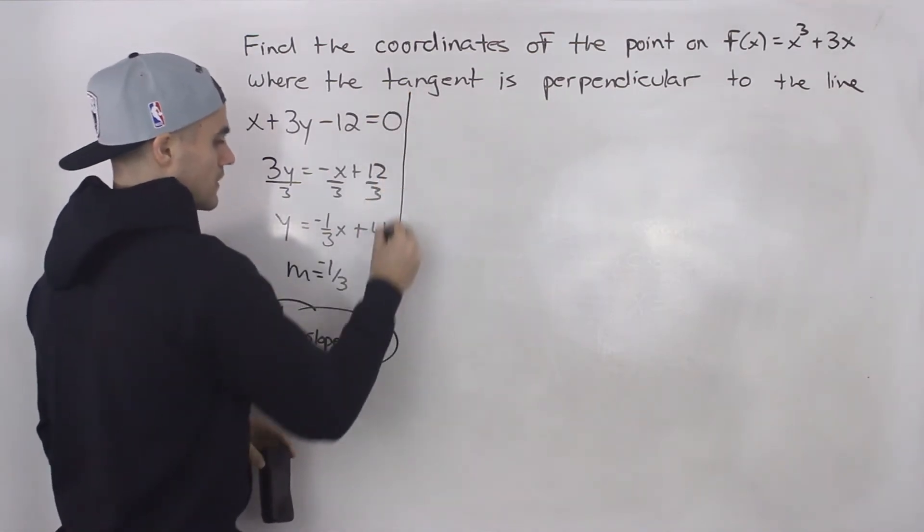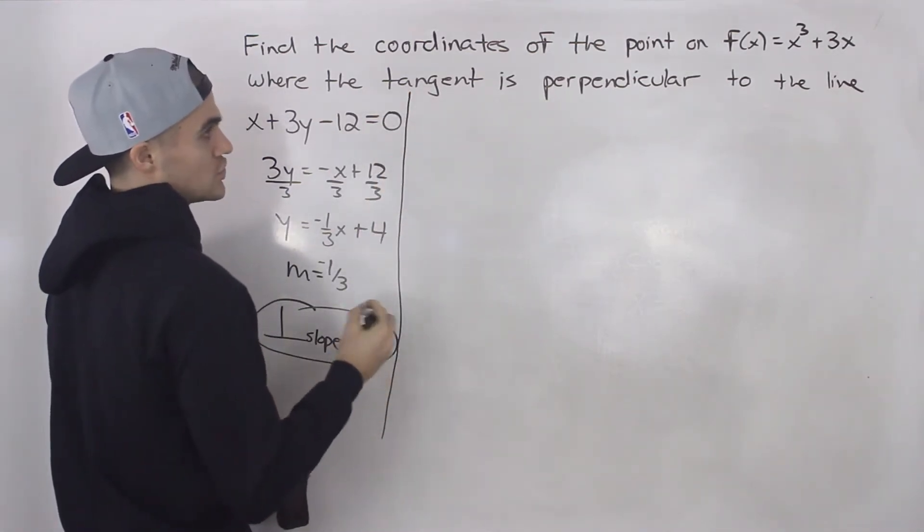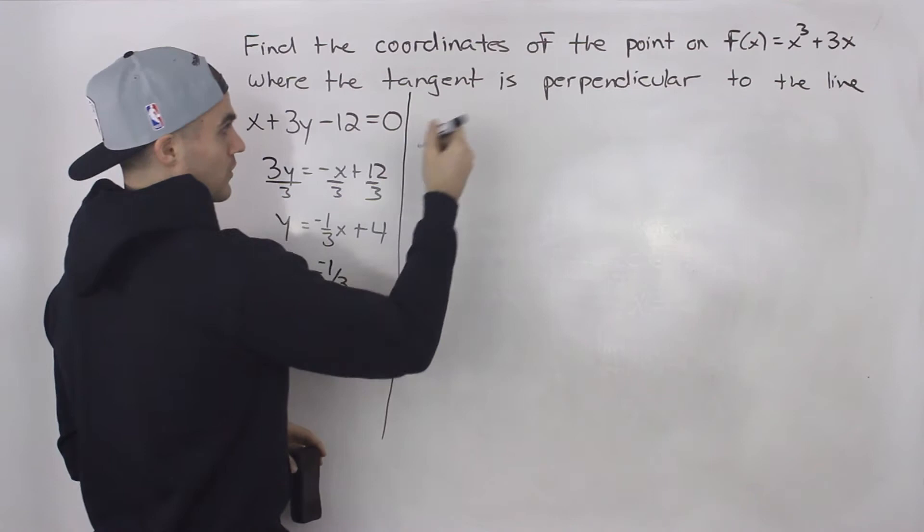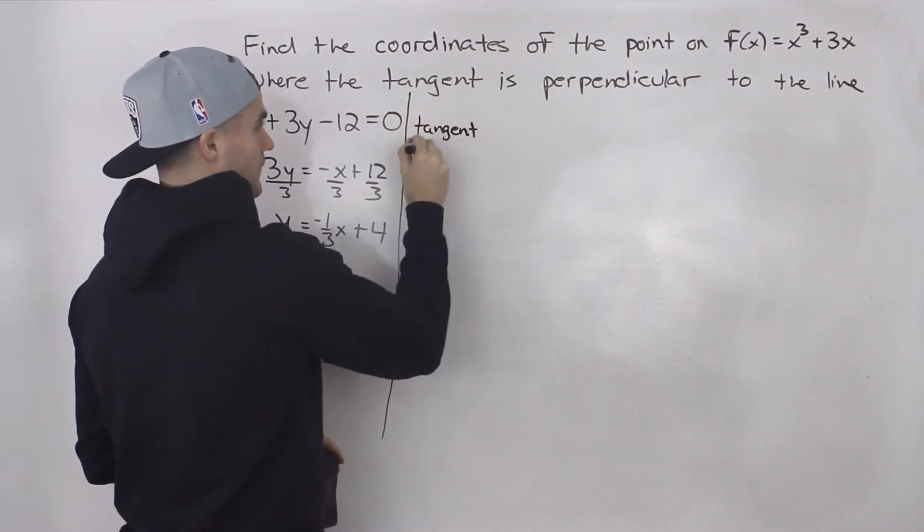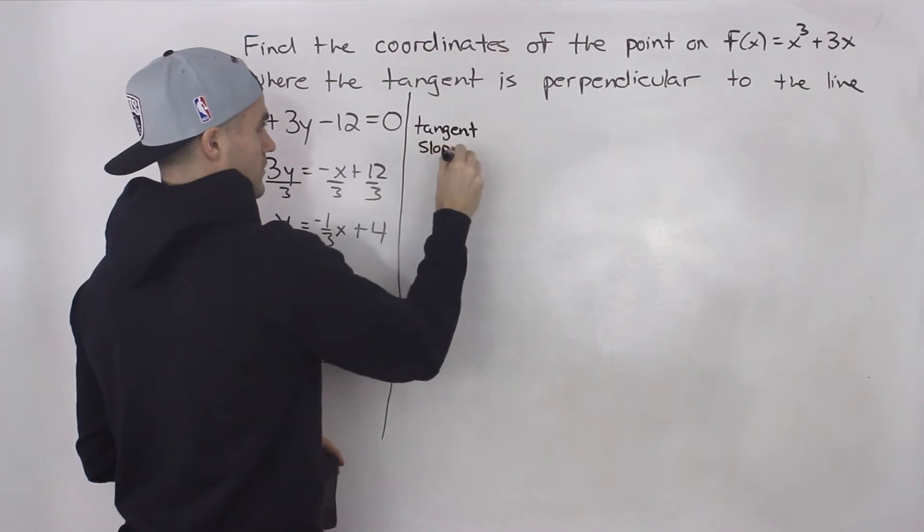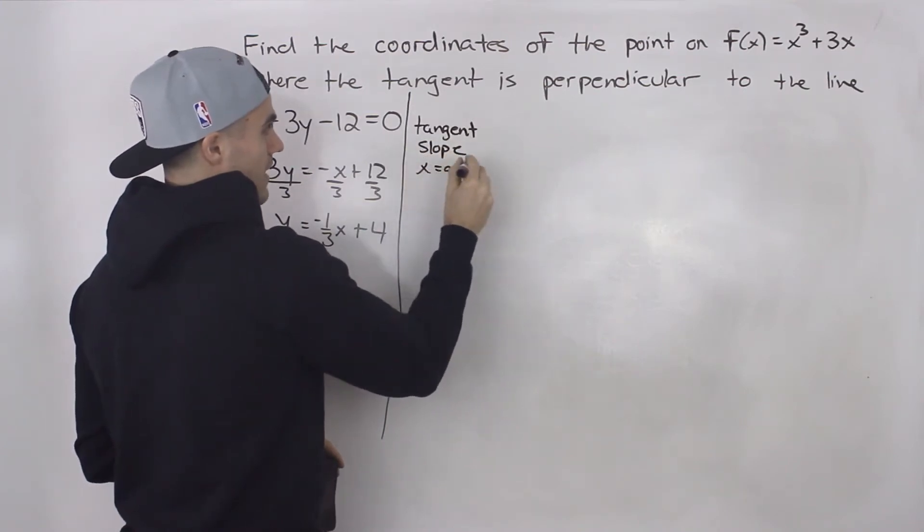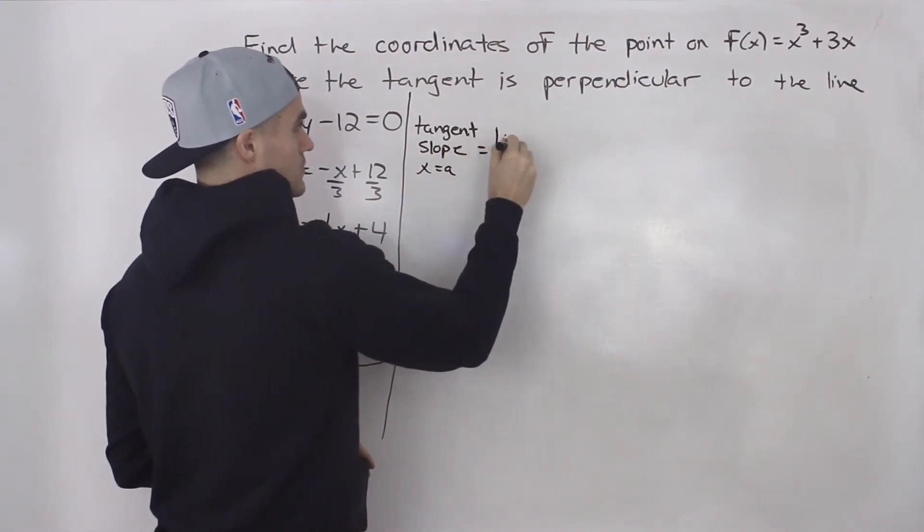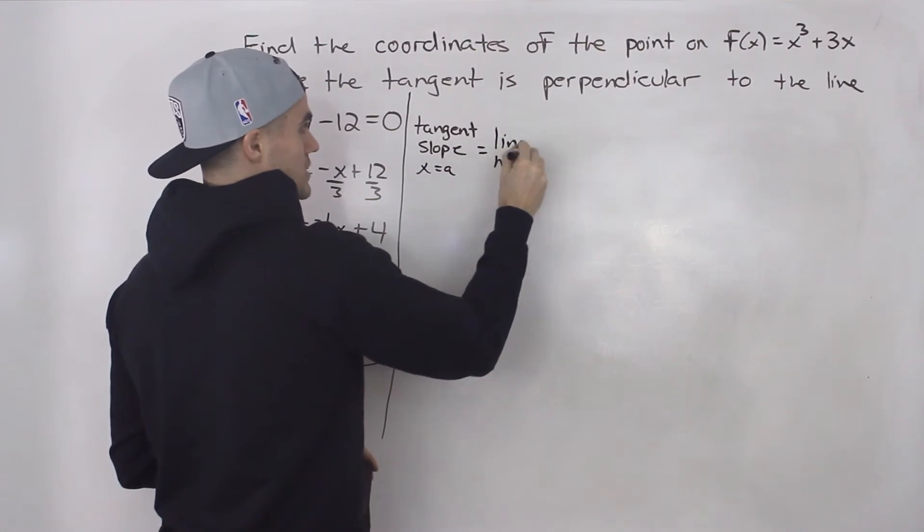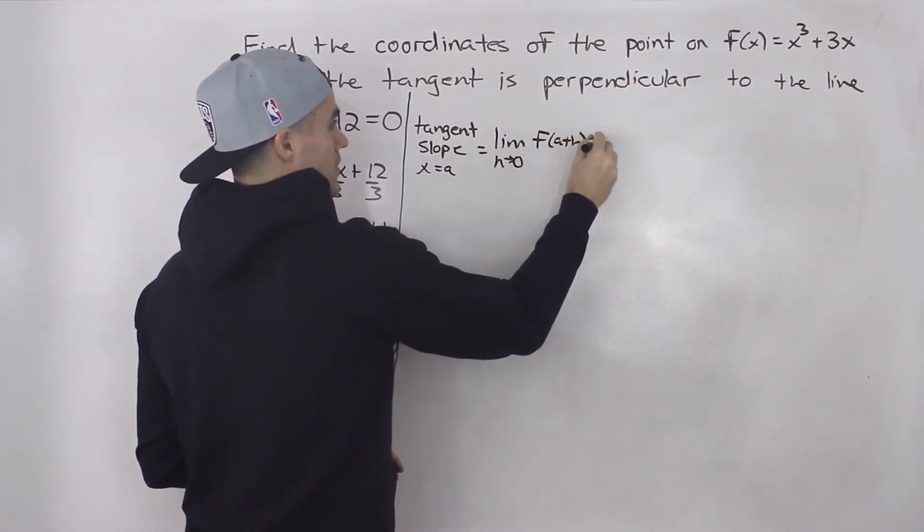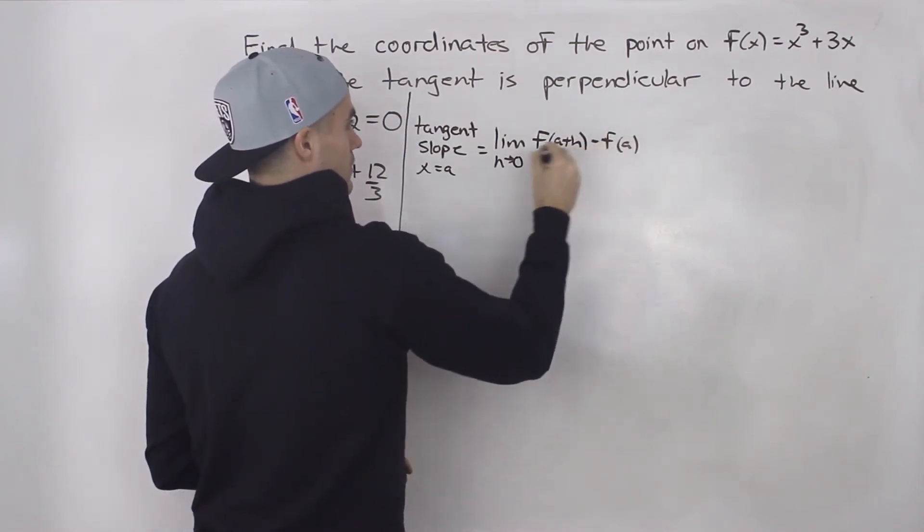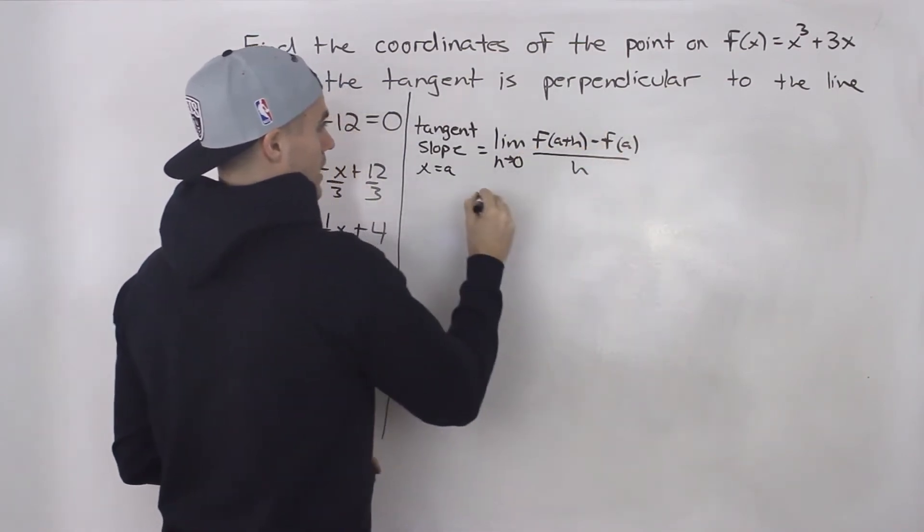So we need to find the point where the tangent slope on that function is going to equal 3. So what we can do is we can find a general expression for the tangent slope at any x value. So when x is equal to a, and we know that that's equal to just the difference quotient limit as h goes to 0 of f(a + h) - f(a) all over h.